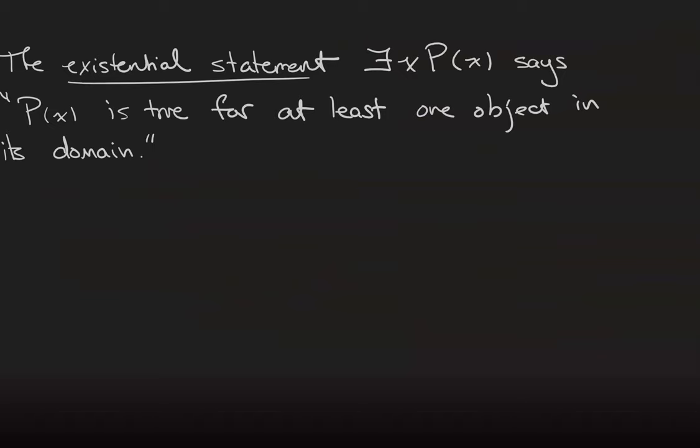The existential statement, which is read there exists an x such that P(x) is true. This thing here is this time called the existential quantifier, says that the statement P(x) is true for at least one object in its domain.